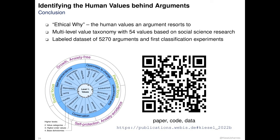To summarize and conclude, we present an investigation on the ethical why, namely on the human values behind arguments. As an operationalization, we presented a consolidated multilevel value taxonomy with 54 values at its core. To foster research on automated systems, we provide a dataset of 5,270 human well-labeled arguments, on which we show first empirical results with out-of-the-box models beating the baseline. I hope this talk sparked your interest in the topic. We are currently investigating ways to conduct an international challenge, so please look out for announcements or directly contact me. Thank you.